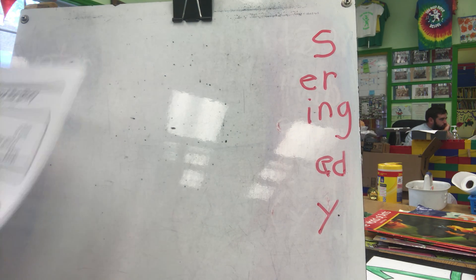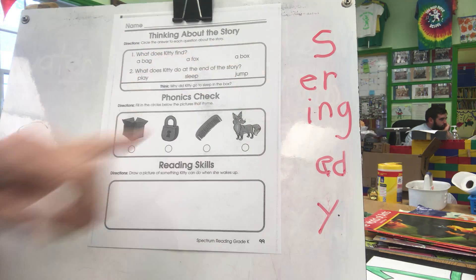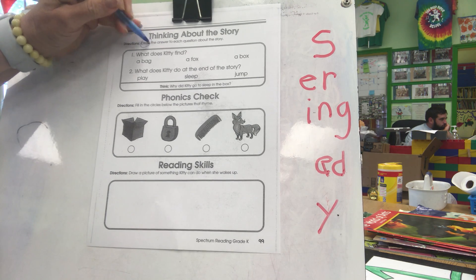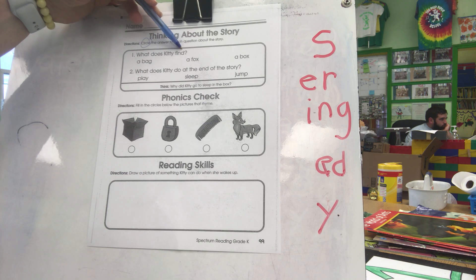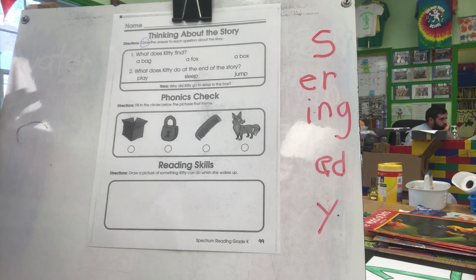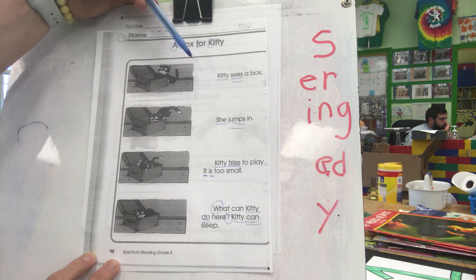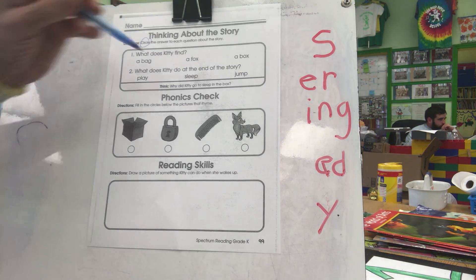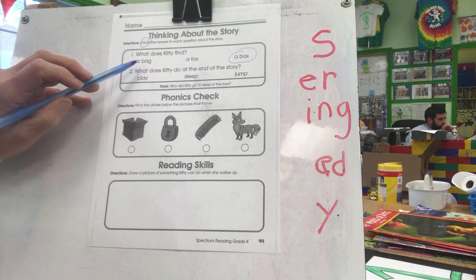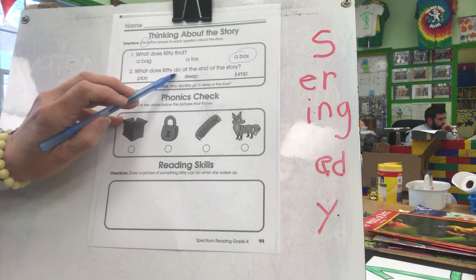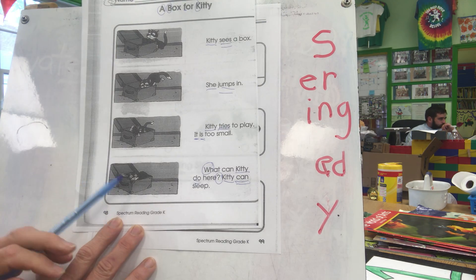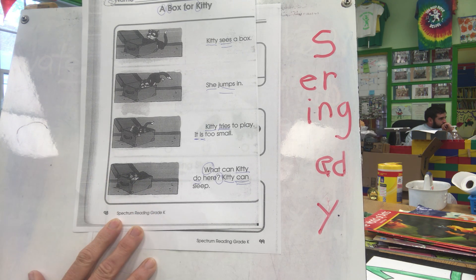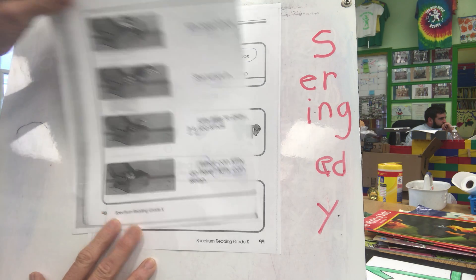Let's think about that story. I'll circle the answer to each question. What does Kitty find? If your memory is good, you might remember — if not, go back to the text. The answers for all the questions are in the text. A box — we're going to put a ring around a box, not a fox, not a bag. What does Kitty do at the end of the story? You can look at the picture or the text. She sleeps — not play, not jump, but sleep.